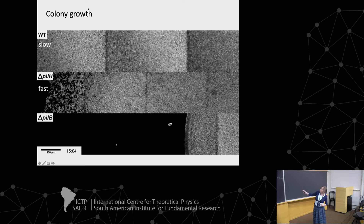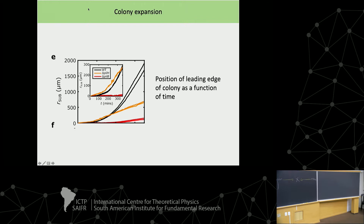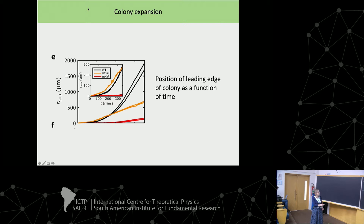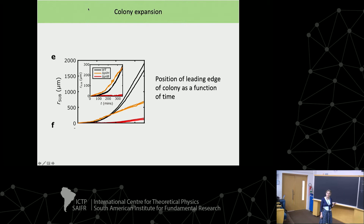Something is going on and we have to understand what. It turns out we can explain this in terms of topological defects, which is surprising. This graph shows the radius of the colony — the position of the leading edge — as a function of time. The black ones are the slow wild-type: they start slower but then cross over and become quicker. The yellow ones are the genetically modified ones with more feet, meant to be faster, but eventually they spread slower. That's strange — we need to explain what's going on.